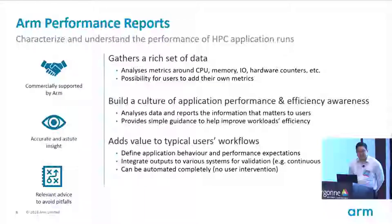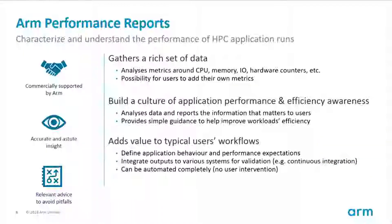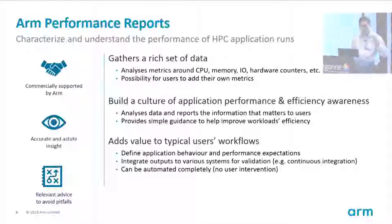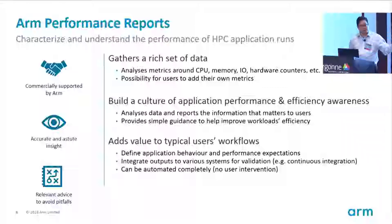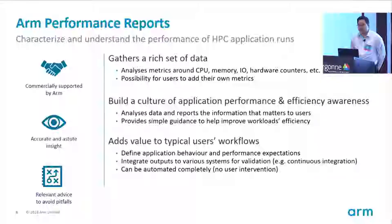In addition to DDT and Map, we have a tool called Performance Reports. Performance Reports gives you a nice high-level overview of how your program is running on your system. Sometimes you take your code, it works great on your university cluster, but when you transfer it to a different system with newer generations of CPUs, it's often possible to squeeze out a little more performance just by tweaking parameters in the code.